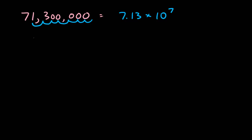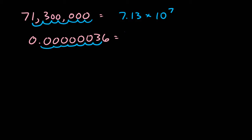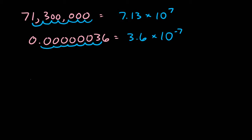To write the number 0.00000036 in scientific notation, we wind up with the number 3.6 after moving the decimal a total of 7 places. Since the number is really small, we would then have a negative exponent, and the number would be read as 3.6 times 10 to the negative 7th.